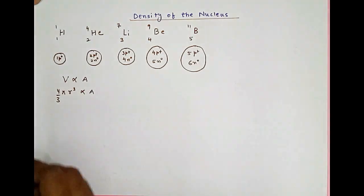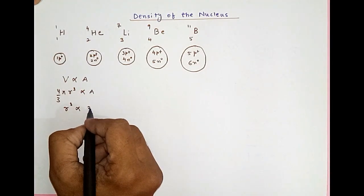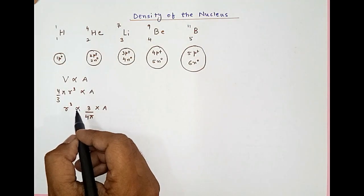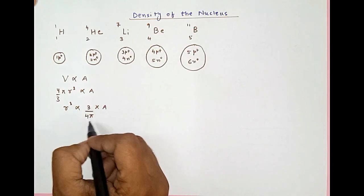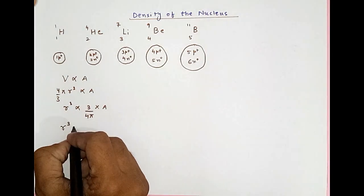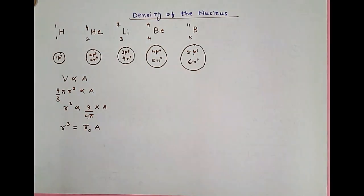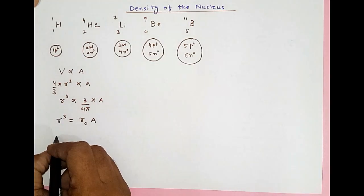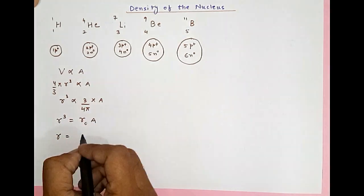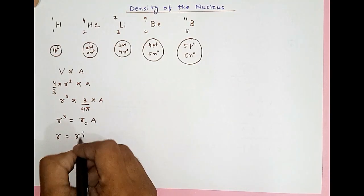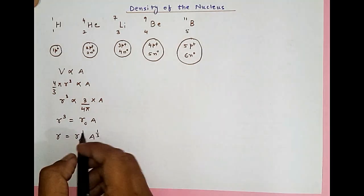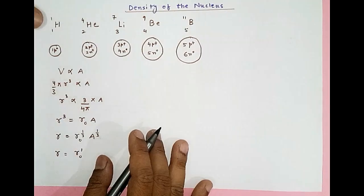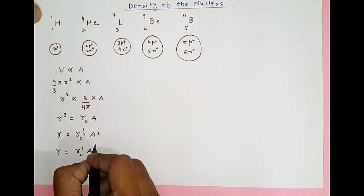Volume = (4/3)πr³ is proportional to A, so r³ is proportional to (3/4π) times A. If I remove the proportionality sign and introduce a constant, r³ equals r₀ times A. Taking the cube root on both sides, we get r = r₀^(1/3) times A^(1/3), which gives us a new constant r₀'. So the formula is r = r₀' · A^(1/3).